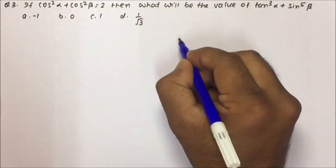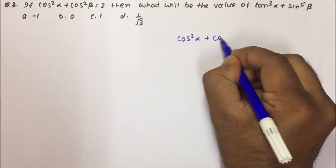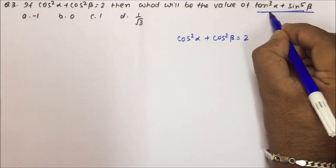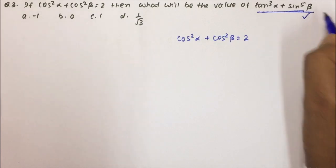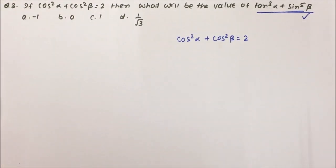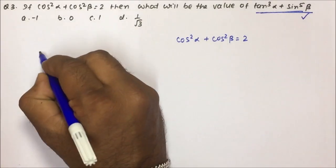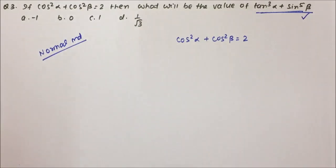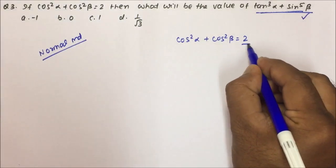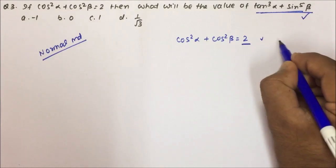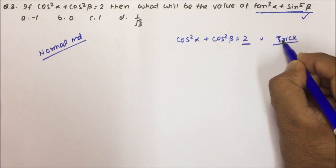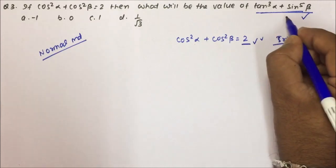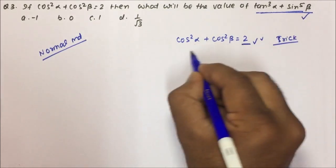Moving to question number 3: if cos²α + cos²β = 2, find the value of tan³α + sin⁵β. This is not a simple question; by the normal method you would spend a minimum of 2 to 3 minutes on it. The trick here is that we need to find the values of α and β, so we will substitute suitable values to solve it easily.